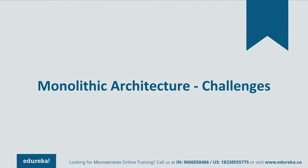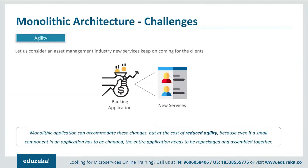Let's understand these challenges one by one. The first challenge is Agility. Consider an Asset Management Industry where different clients come with different investments and need different services. If any new services had to be given or any changes had to be made, a monolithic application could accommodate those changes — but at the cost of reduced agility. This happened because even if a small component had to be changed, the entire application had to be repackaged together.